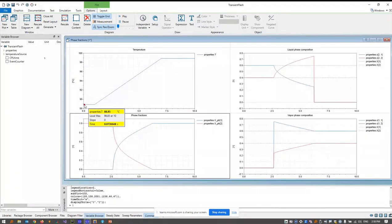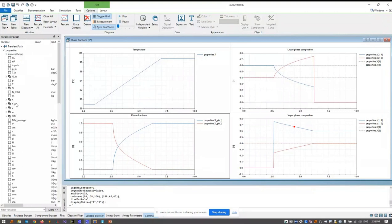And we can see some interesting properties and calculation results. Here is the temperature. Here are the phase fractions of the mixture, the liquid phase composition and the vapor phase composition. And here on the left is the variable browser where we can investigate the components and all the variables and parameters of them.